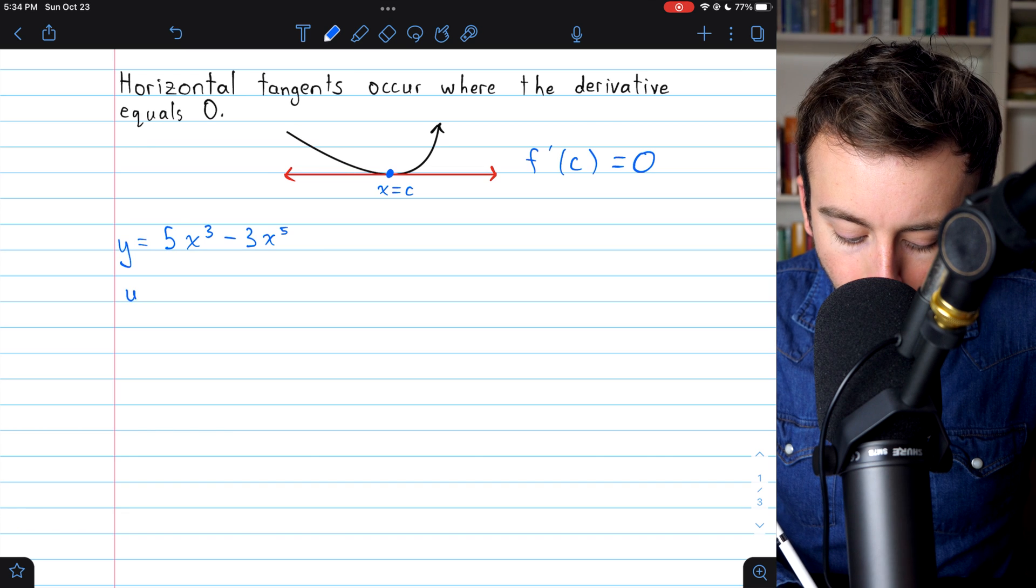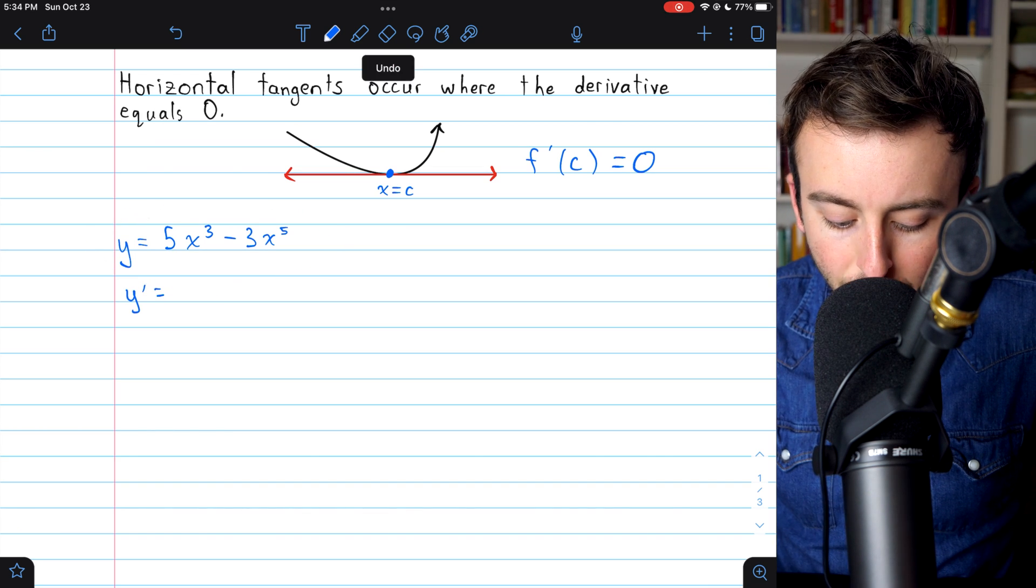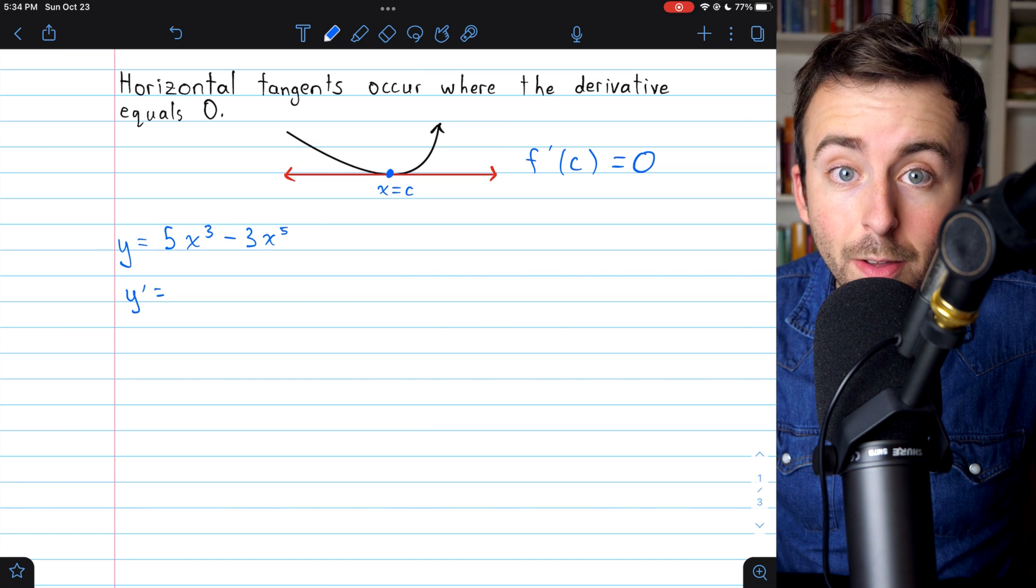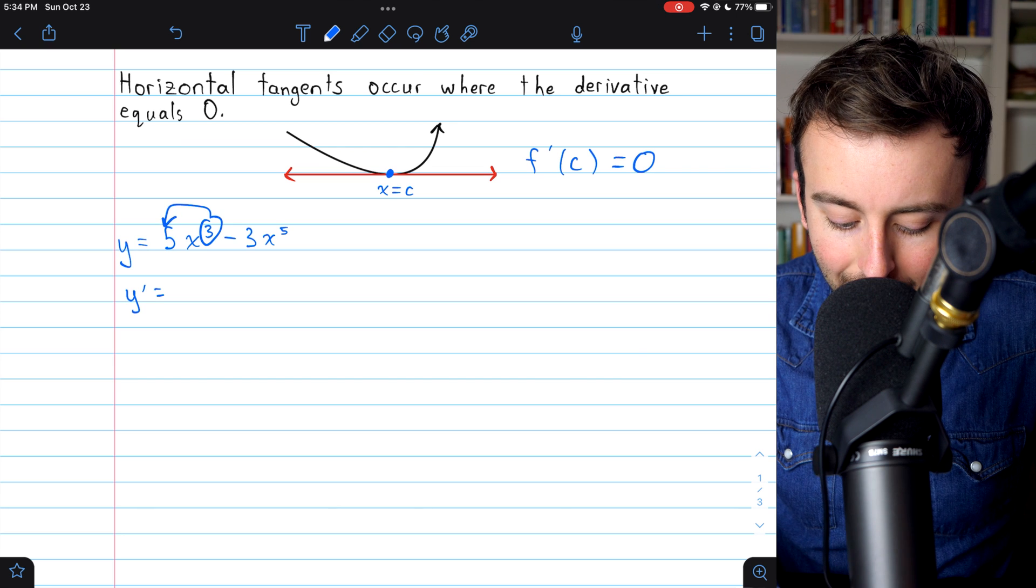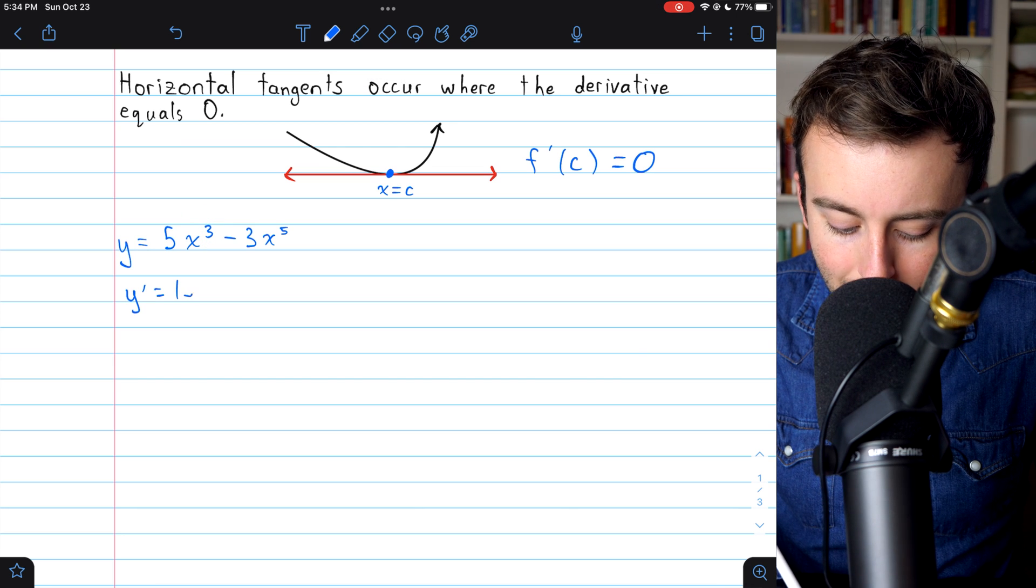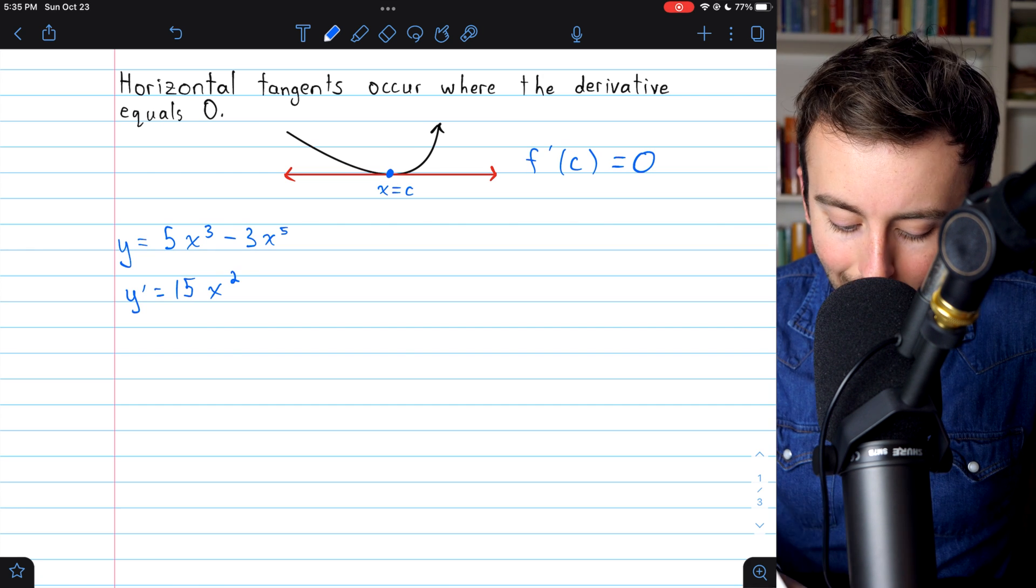So we'll look for y prime, the derivative of this curve. That's pretty easy. We just need to apply the power rule. So bring this exponent down as a factor. So 5 times 3 becomes 15, and then reduce the exponent by 1. So 15x squared.